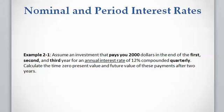Let's work on an example. Assume there is an investment that pays you $2,000 at the end of year one, year two, and year three, for an annual interest rate of 12% compounded quarterly. We want to calculate the present value at time zero and the future value at the end of year three of these payments.